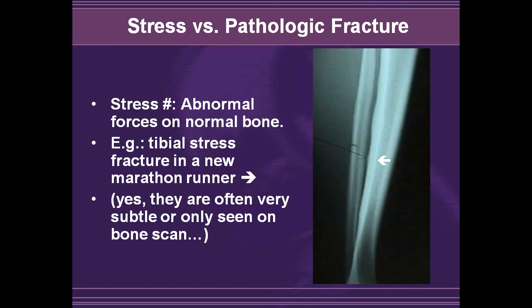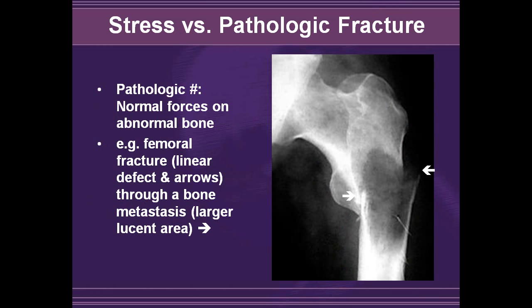A stress fracture is an abnormal force on a normal bone — for example, tibial stress fractures in marathon runners. Whereas a pathologic fracture is a normal force on an abnormal bone. In this example, the patient has a lytic lesion in the bone with a fracture through it. The bone may be pathologic with a benign lesion or a metastatic or malignant lesion.